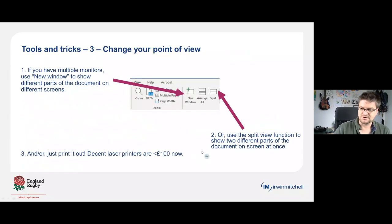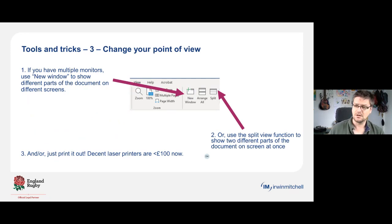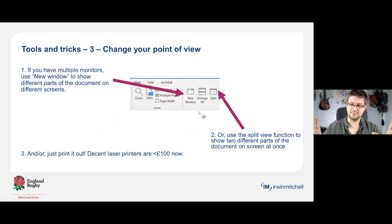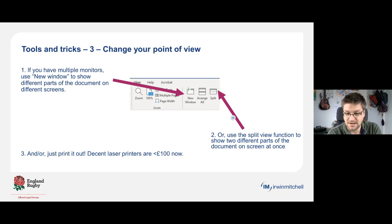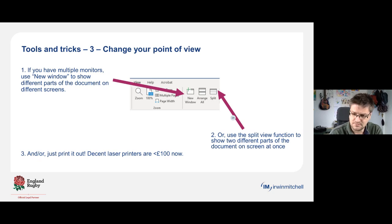When navigating longer documents it's a good idea to change your point of view. If you have multiple monitors, Word allows multiple windows on the same document simultaneously — hit the 'New Window' button and shift it to your other monitor, so you can have the definitions section on one screen and the clause you're reviewing on the other. If you don't have two monitors, you can achieve much the same effect with the Split button, which splits your screen horizontally. Or just print it out — laser printers are cheap now; I paid less than £100 for one that does 30+ pages a minute double-sided.